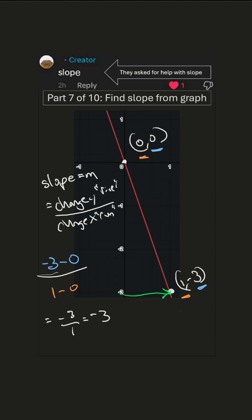So for every one unit of run, what is our rise? Well in this case we go down 3, so it's that simple. The slope is negative 3. All right, thanks for watching.